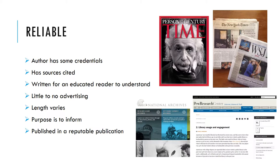Reliable sources are a tier above. These are not necessarily scholarly but are reputable publications that are written to inform and educate. Some examples include Time Magazine, the New York Times, the Pew Research Center, and any information coming from the government. These have clearly cited sources, they list an author who has some credentials, and they are written for a more educated audience.